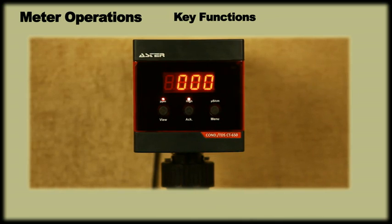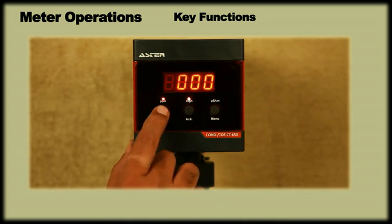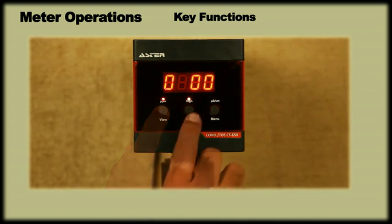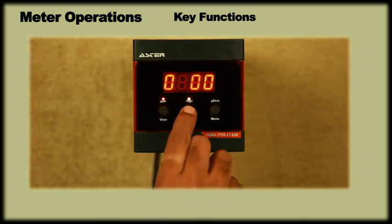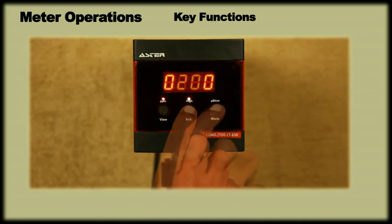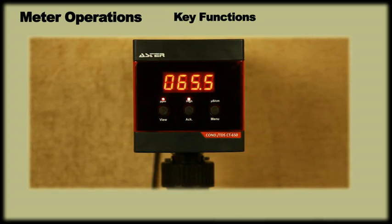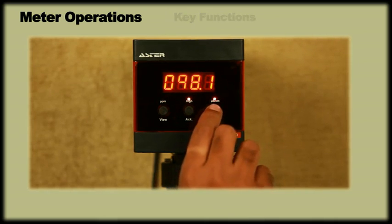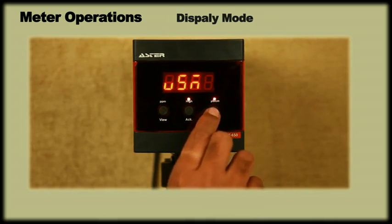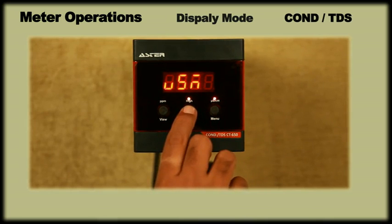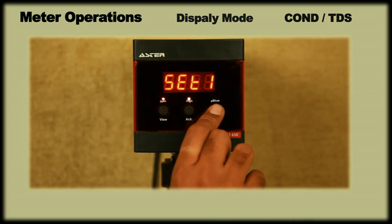While programming, the view key can be used to right shift, the ACK key for increment and menu key to enter and save the setting. Now, to select the display mode, press menu key twice. Select the required mode as conductivity or TDS using the ACK key and press menu to save.